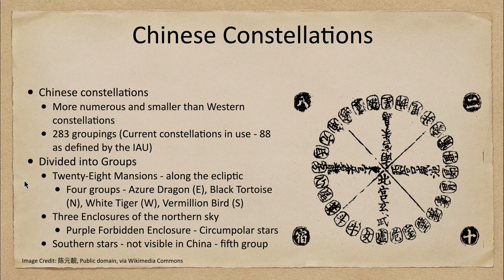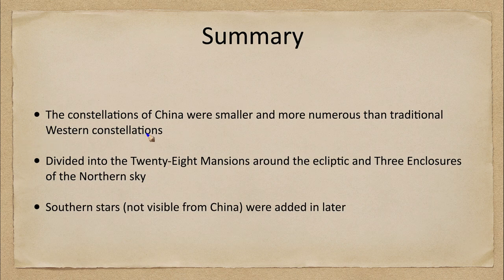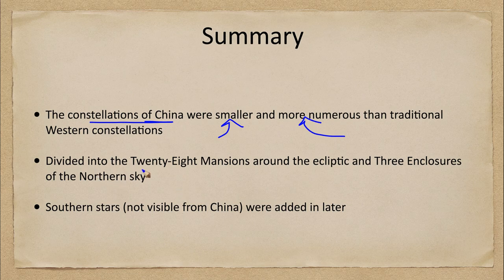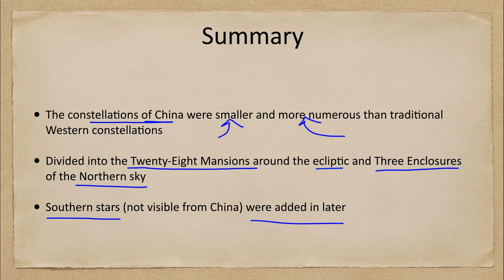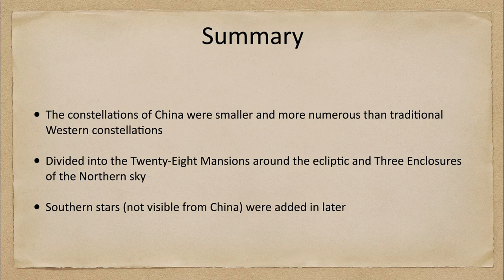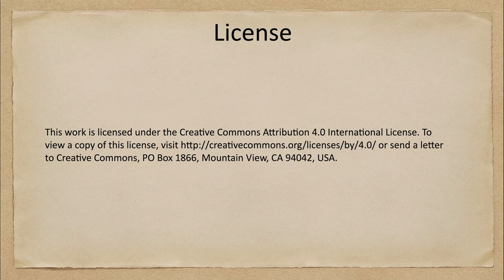In summary, the constellations of China were smaller and more numerous than the traditional Western constellations. The sky was divided into 28 mansions around the ecliptic and three enclosures of the northern sky, including the purple forbidden enclosure around the circumpolar stars. The southern stars, not visible from China, were added later as a fifth group. That concludes this lecture on the Chinese constellations — we'll be back next week for another astronomy of other cultures. Have a great day everyone, and I will see you in class.